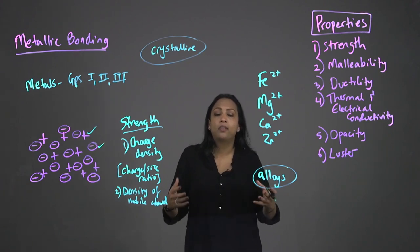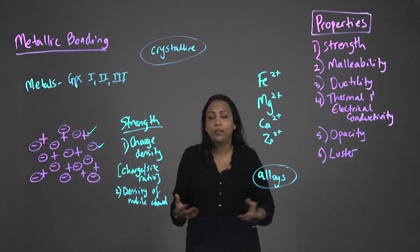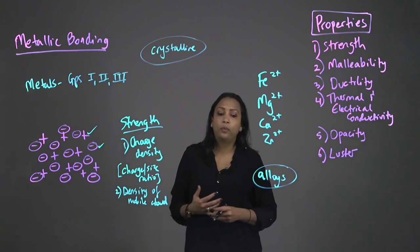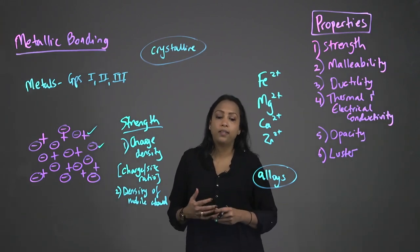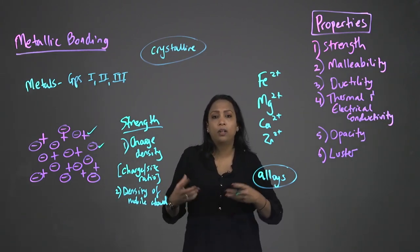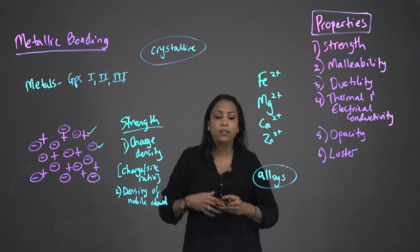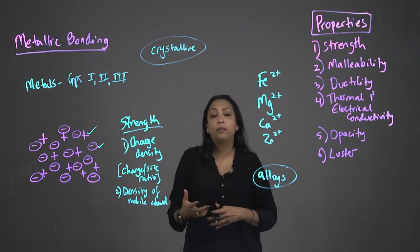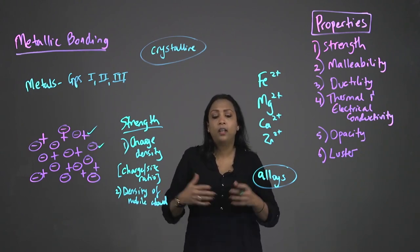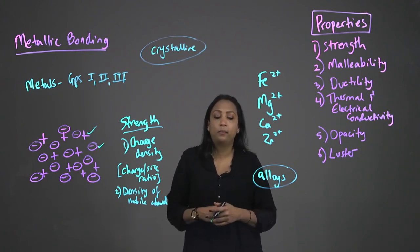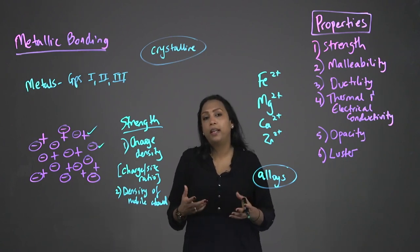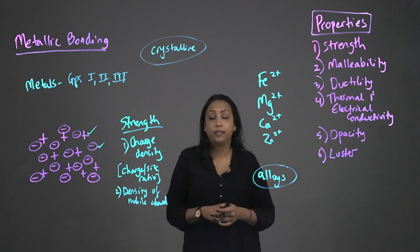For example, stainless steel is an alloy which comprises chromium, nickel, molybdenum, titanium, manganese, etc. Stainless steel plays a very important role in orthopedic and dental devices.